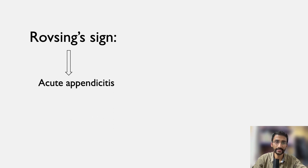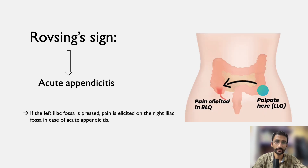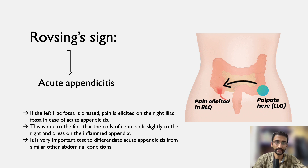Rovsing's sign is done in case of acute appendicitis. If the left iliac fossa is pressed, pain is elicited in the right iliac fossa in case of acute appendicitis. This is because the coils of ileum shift slightly to the right and press on the inflamed appendix. It is a very important test to differentiate acute appendicitis from similar other abdominal conditions.